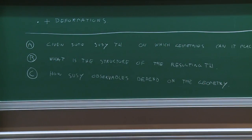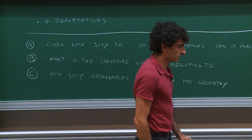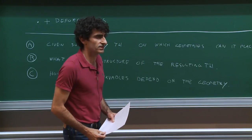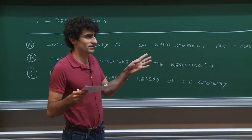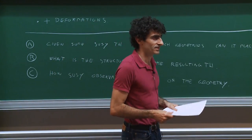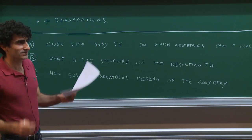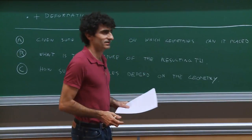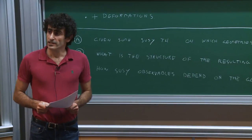What do we mean by the structure more concretely? For instance, you would like to know: if I take a field theory in 4D and place it on some curved manifold, and suppose this theory has a Lagrangian description, then what are the couplings that I have to write down on that specific manifold? These are fairly general questions.